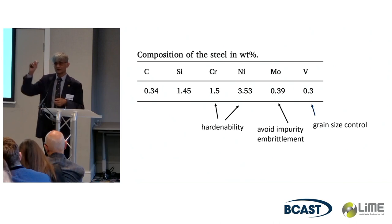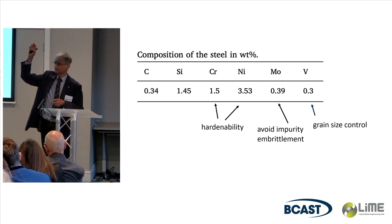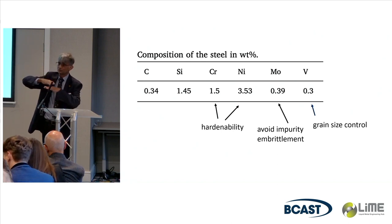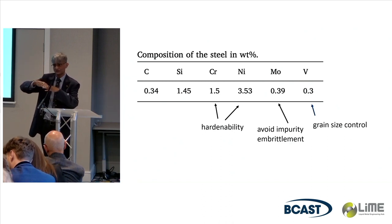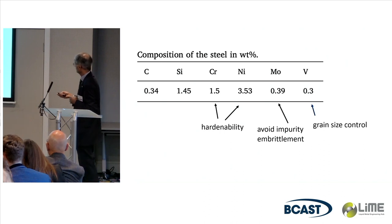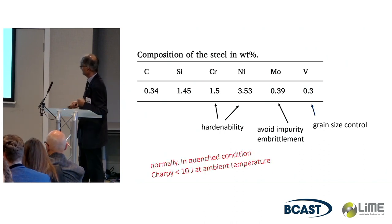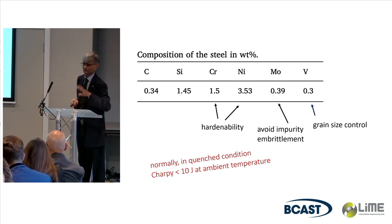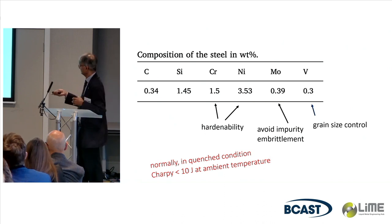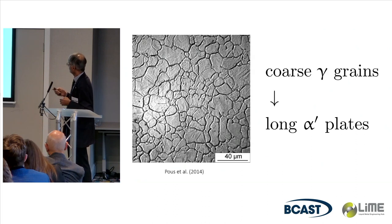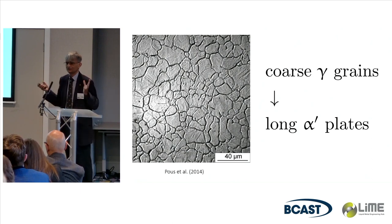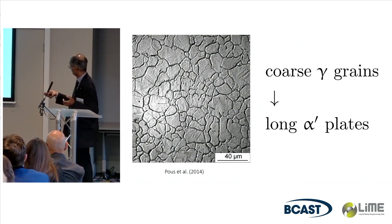Why vanadium? Why not niobium? Niobium carbides form at a very high temperature, whereas I want to actually create the austenite at a very low temperature. Vanadium carbide is less stable than niobium carbide, so it precipitates at a low temperature. Normally, if you quench this material after austenitizing at 1000 degrees centigrade, you will get pretty poor toughness.